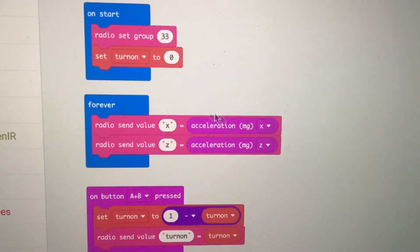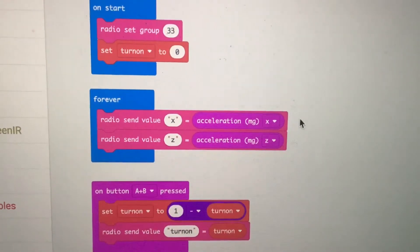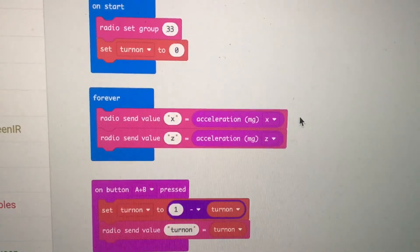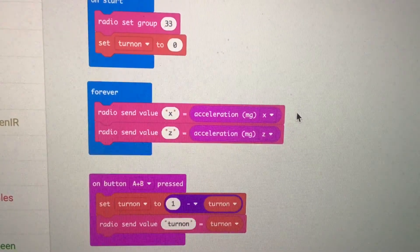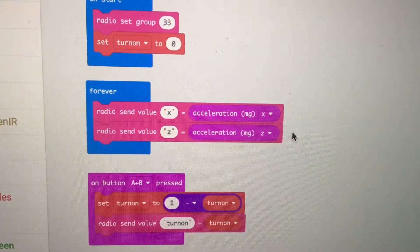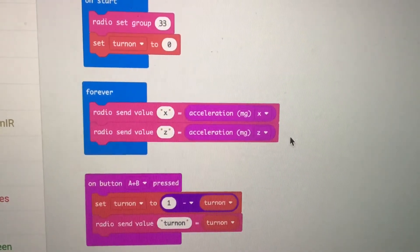This is the forever loop. And in this one I measure the acceleration in the x and z directions. And I send the values over the radio. The x is going to measure the side to side tilting. The z is going to measure forwards and backwards tilting of the microbit board.